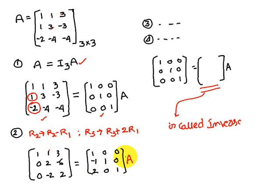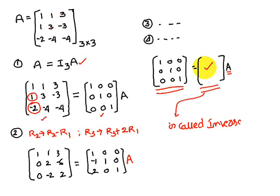Continue applying row operations only. Once the left-hand side matrix is reduced to normal form, whatever matrix you have obtained on the right-hand side is the inverse of matrix A. This is the procedure to find the inverse of a matrix using the Gauss-Jordan method. Thank you.